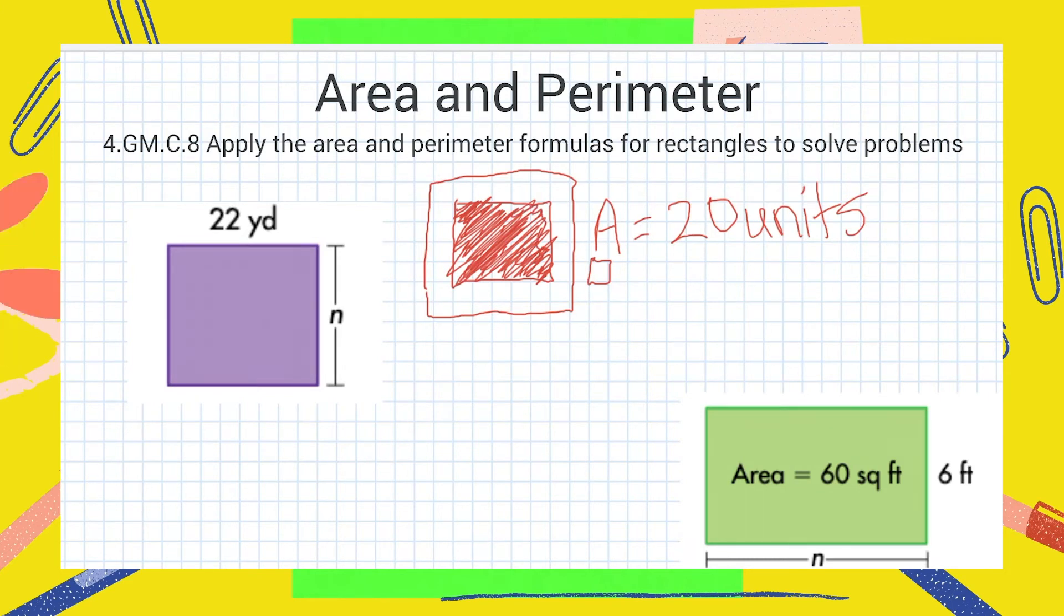So let's take a look at the purple figure here. I know that this is a square which means all of these sides are going to be equal. 22 yards is the measure of one side and I know that that's going to be the measure of every other side since it is a square. If area is the amount of units needed to cover the figure, I'm going to be finding out how many square yards are needed to cover this square. I can do that by multiplying the length times the width.